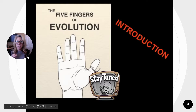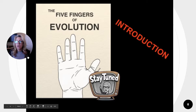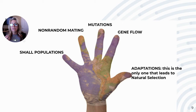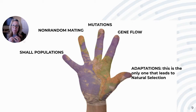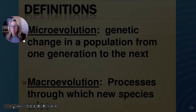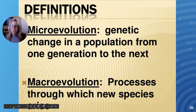I encourage you to Google the 'five fingers of evolution' — that's a great video on the types of things that can change allele frequencies. In a nutshell: if you have a small population, they're more susceptible to genetic drift; non-random mating; mutations; gene flow — new members coming into or leaving your population; or any type of selection. These five things can change your allele frequencies and cause evolution to occur.